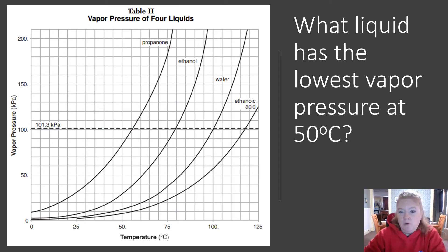What liquid has the lowest vapor pressure at 50 degrees Celsius? I find 50 degrees Celsius and go up. The first line I hit would have the lowest vapor pressure.